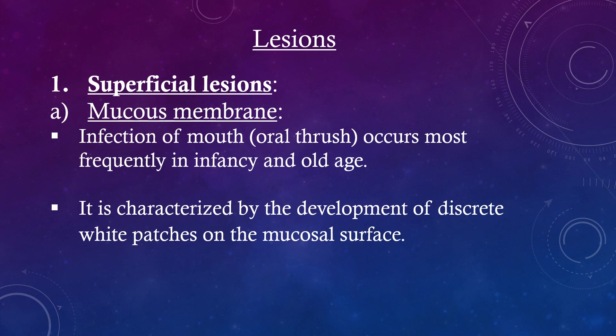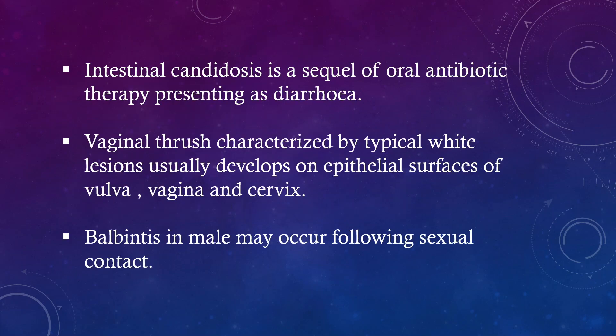Lesions — superficial lesions. Mucous membrane: Infection of the mouth, oral thrush, occurs most frequently in infancy and old age. It is characterized by the development of discrete white patches on the mucosal surface. Intestinal candidiasis is a sequel of oral antibiotic therapy presenting as diarrhea. Vaginal thrush, characterized by typical white lesions, usually develops on epithelial surfaces of the vulva, vagina, and cervix.